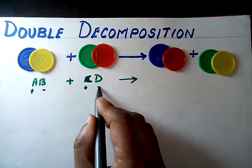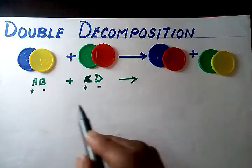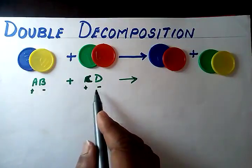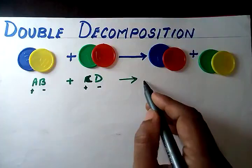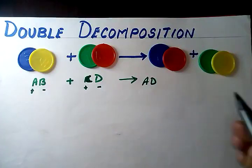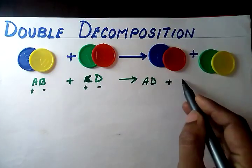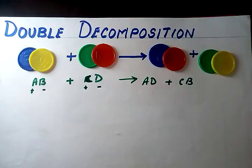A is a cation and D is an anion. Now A combines with D, so you'll have a product as AD. And C combines with B. We generally have a process of writing down the cations first and then the anion for easy understanding.